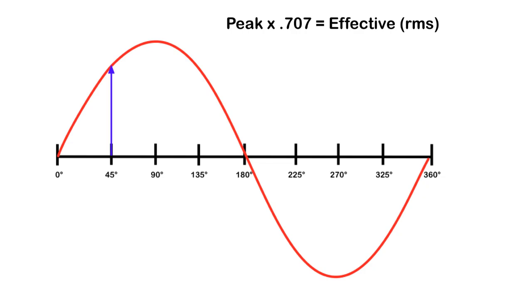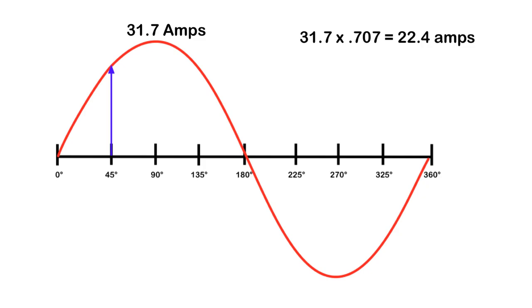Now, as far as the calculation is concerned, instead of trying to figure out that RMS value, we can just use this 0.707. So if we take peak times 0.707, that gives us our effective or our RMS value. As an example, if I wanted the RMS value of a waveform that had 31.7 amps, I would take the peak value of 31.7 amps, multiply that by 0.707, and we get our effective value of 22.4 amps. And that is a conclusion of our analysis of the AC waveform.